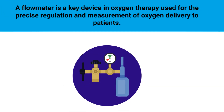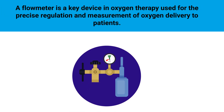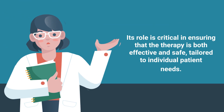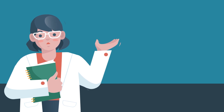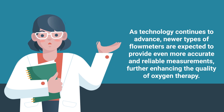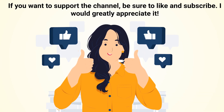A flow meter is a key device in oxygen therapy used for the precise regulation and measurement of oxygen delivery to patients. Its role is critical in ensuring that the therapy is both effective and safe, tailored to individual patient needs. As technology continues to advance, newer types of flow meters are expected to provide even more accurate and reliable measurements, further enhancing the quality of oxygen therapy.